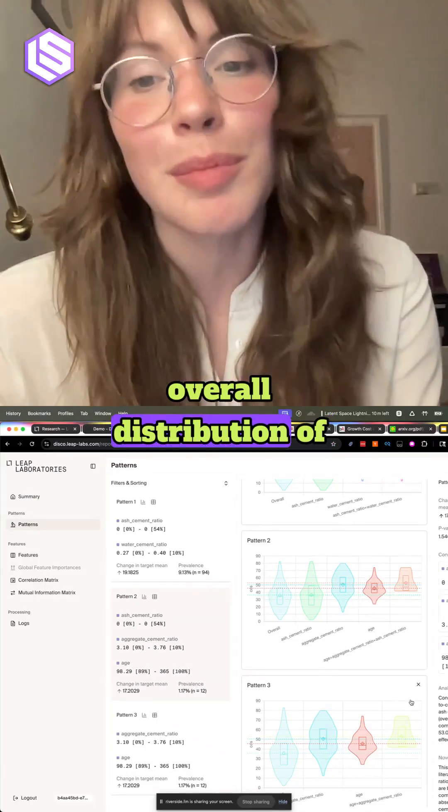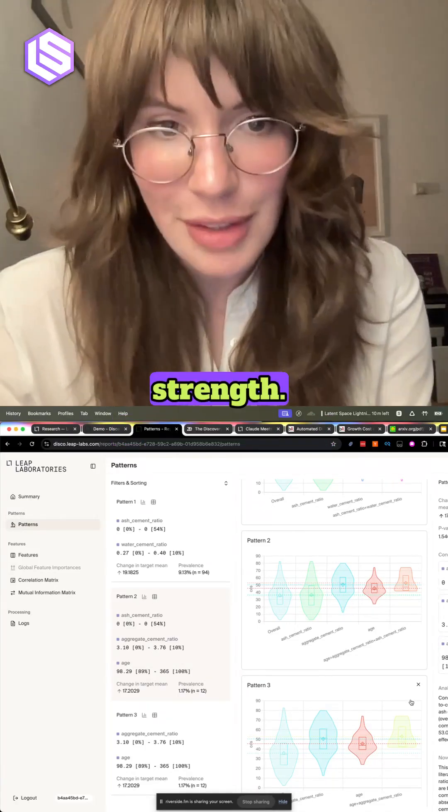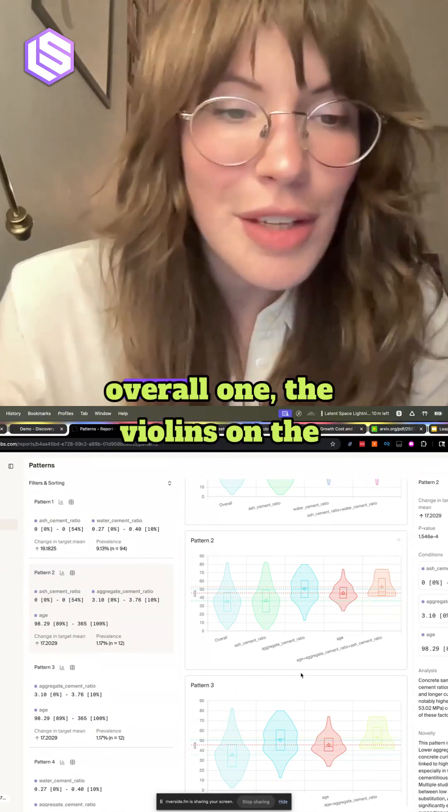On the far left, you can see the overall distribution of concrete compressive strength, and then the violins on the right. Yeah, that's the overall one.